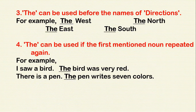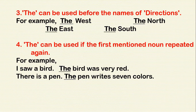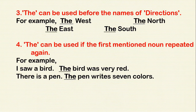Rule 4: 'The' can be used if a noun mentioned for the first time is repeated again. For example: 'I saw a bird; the bird was red.' There is a pen — and in the second mention: 'The pen writes seven colors.'